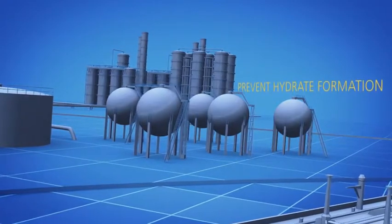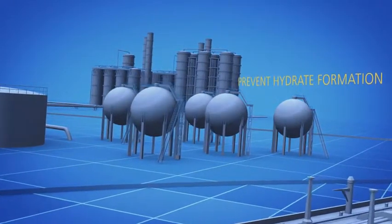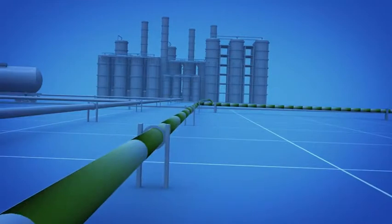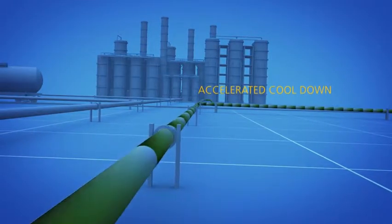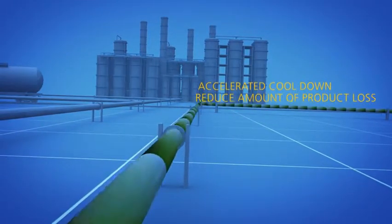Our dryness verification software technology verifies the temperature to help prevent hydrate formation. Baker Hughes liquid nitrogen programs provide accelerated cooldown of pipework to reduce the amount of product loss.